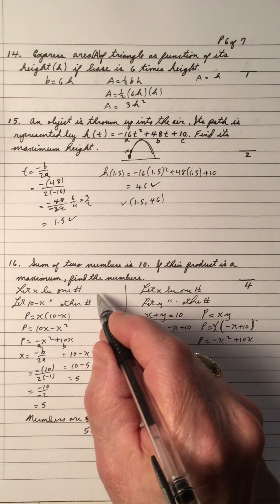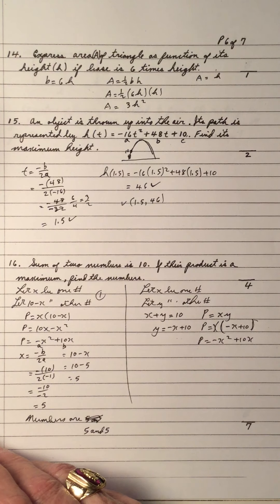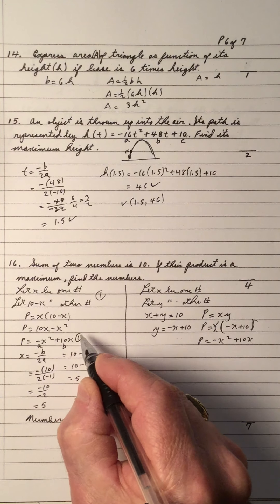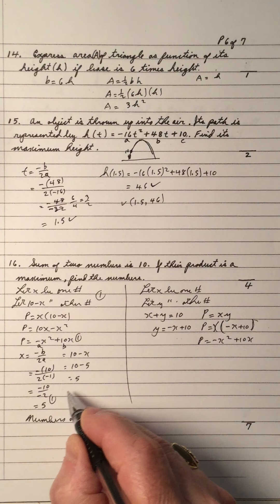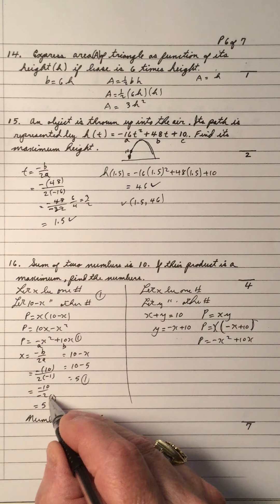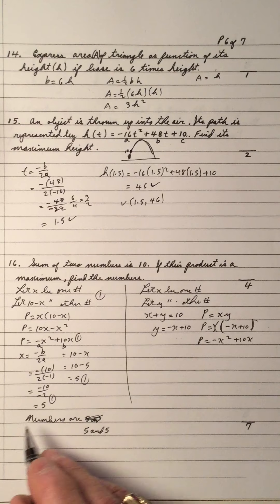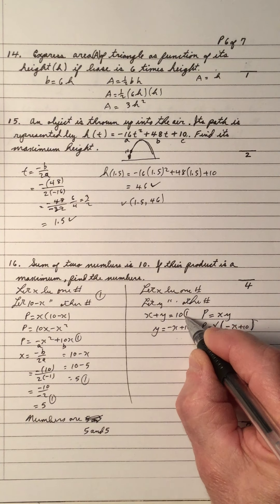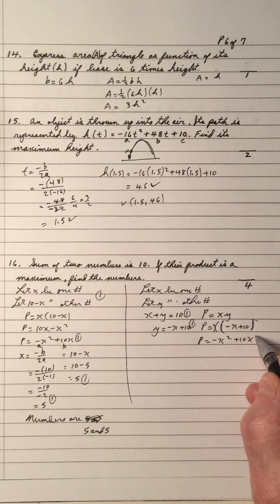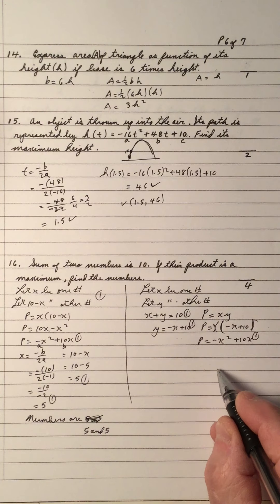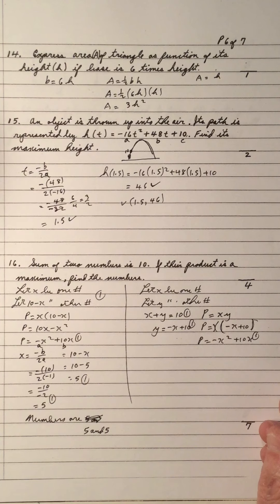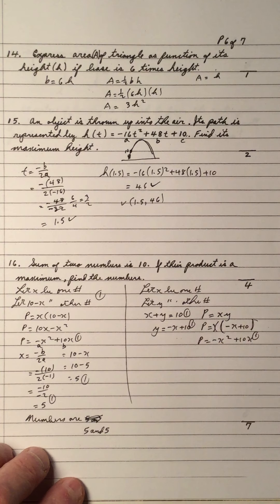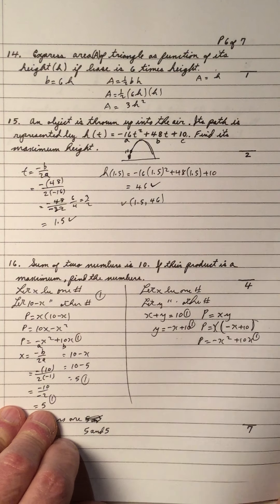Alternatively, let x and y be the numbers: x plus y equals 10 and the product is x times y. Solving for y gives y equals negative x plus 10, and substituting gives the same product equation: negative x squared plus 10x. Either approach yields the same result. Total four marks for this question — one for setting up the equation, one for each number found.